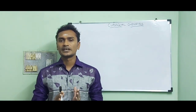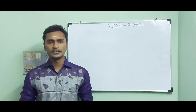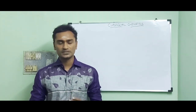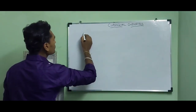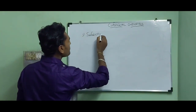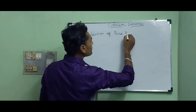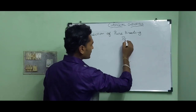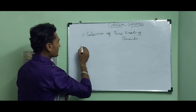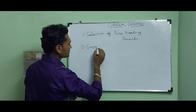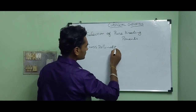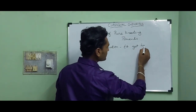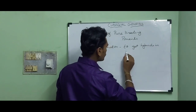Before we get into my explanation, I would like to give you some important information regarding Mendel's hybridization experiment. Mendel constructed three rules to perform hybridization experiment. The first rule is selection of pure breeding parents. The second rule is cross-pollination, to get hybrids in F1 generation.